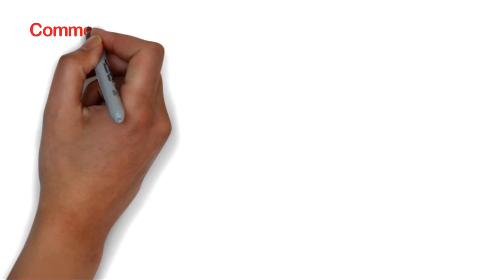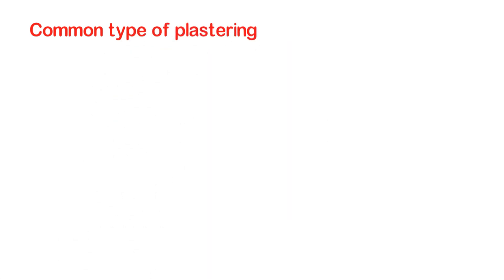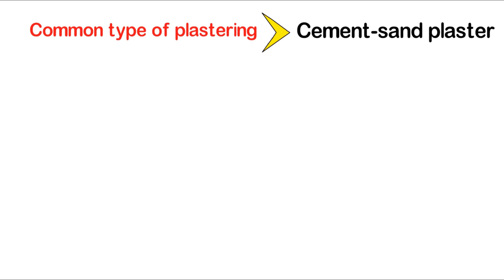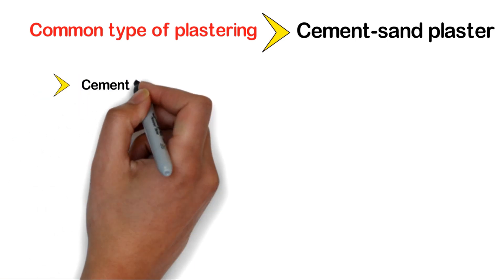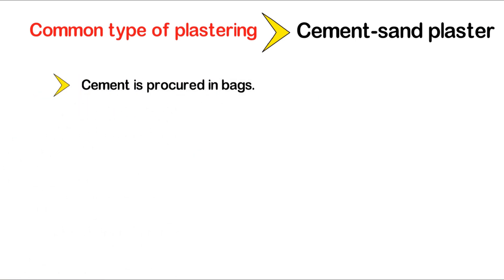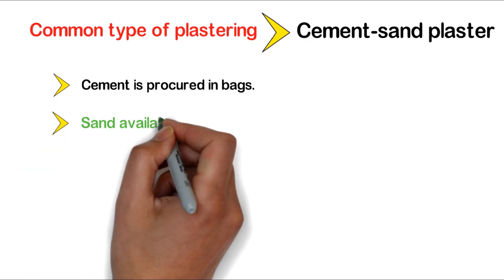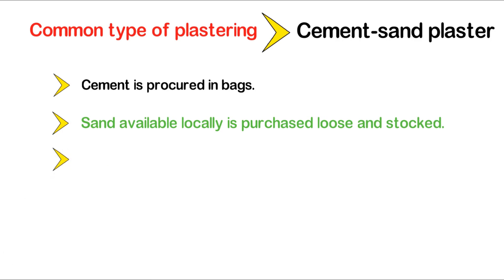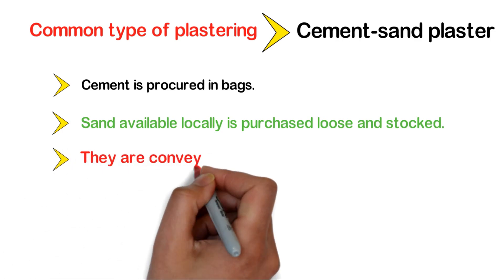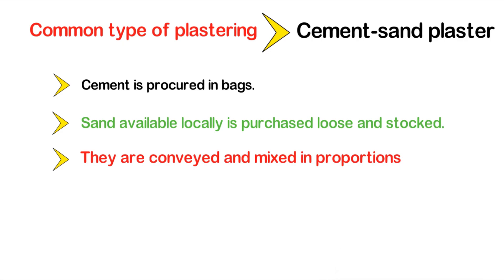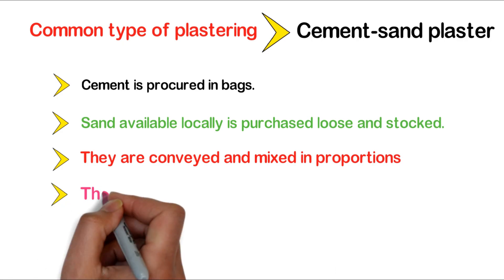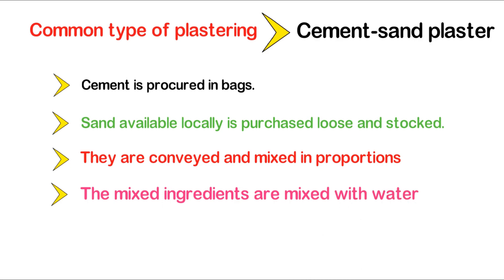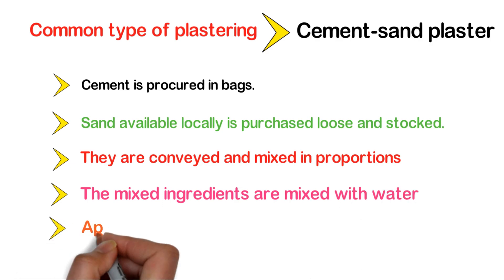What is the most common type of plastering? Cement sand plaster is the most common type of plastering method used. Cement is procured in bags, and sand is available locally and is purchased loose and stocked. Both these ingredients are conveyed and mixed in proportions, then mixed with water and applied to the surface and plastered.